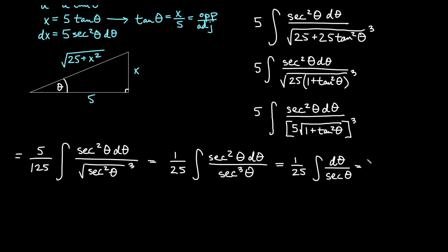And that is going to be more easily done as 1 over 25 antiderivative of cosine theta d theta. Easy antiderivative there. We get 1 over 25 sine of theta plus c.